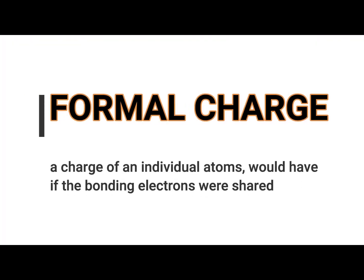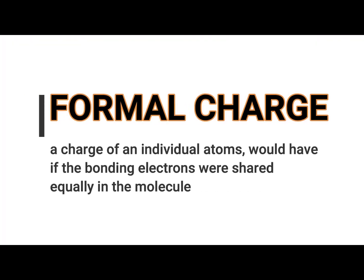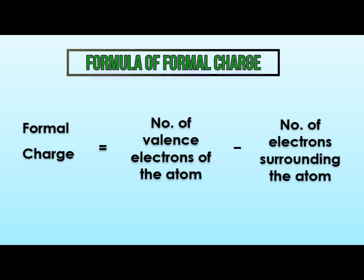Formal charge is defined as the charge an individual atom would have if the bonded electrons were shared equally in the molecule. There is a very simple formula we can use: formal charge equals the number of valence electrons of the atom minus the number of electrons surrounding the atom.